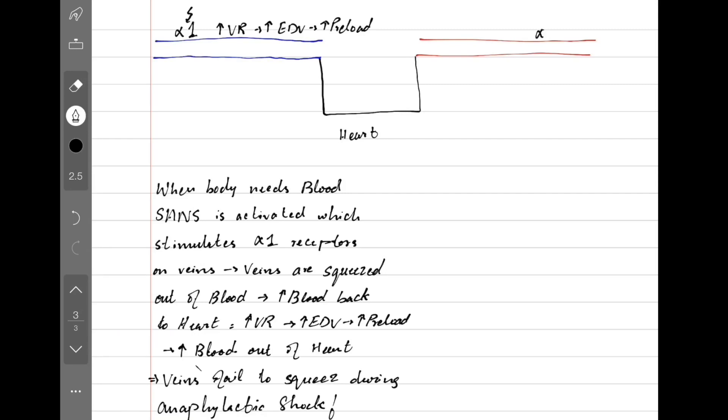The arteries also have alpha-1 receptors, and when activated the arteries behave a little differently. So when the veins' alpha-1 receptors are activated, the veins constrict, more blood comes back to the heart, and as a result, the heart pumps out more blood.